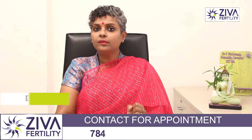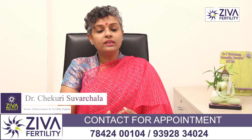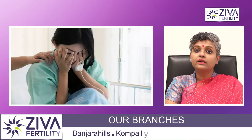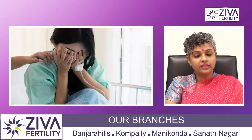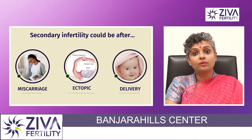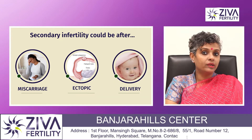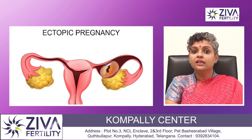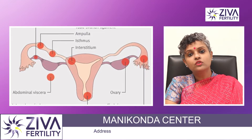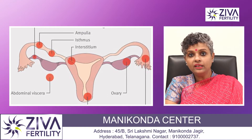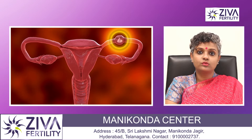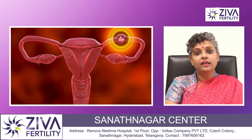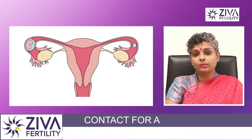Secondary infertility can be of three varieties. One is where a patient has got pregnant but has had a miscarriage — that is also termed as secondary infertility. Next is when a patient has got pregnant but has had an ectopic pregnancy. An ectopic pregnancy is when a pregnancy has taken place either in the tube or in the cervix — anywhere else other than the endometrium, such as in the abdomen.